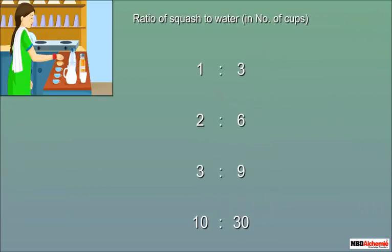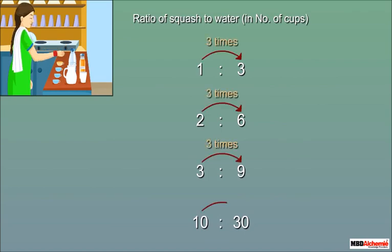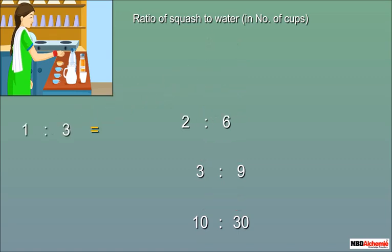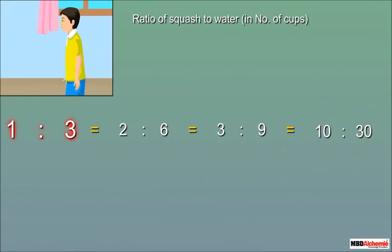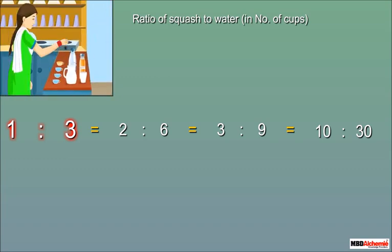For all the ratios we have found, water is always three times the squash — the ratio is constant. Such ratios obtained by multiplying or dividing by any counting number are called equivalent ratios. One is to three is the lowest form, as it cannot be further divided.